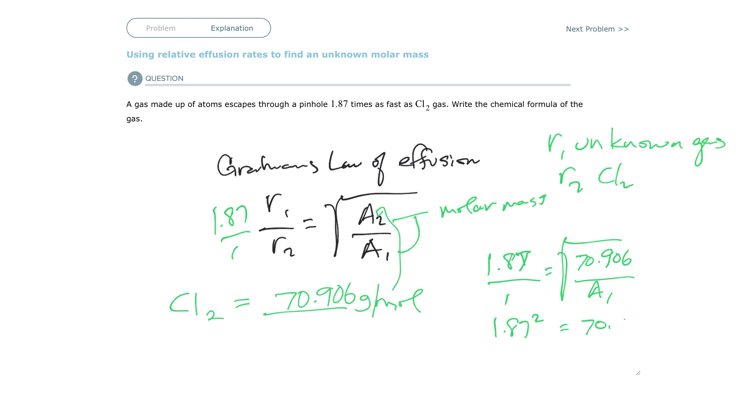equals 70.906 over A1. Let's get A1 up to the top. A1 times 1.87 squared equals 70.906. Then I want to divide by 1.87 squared.